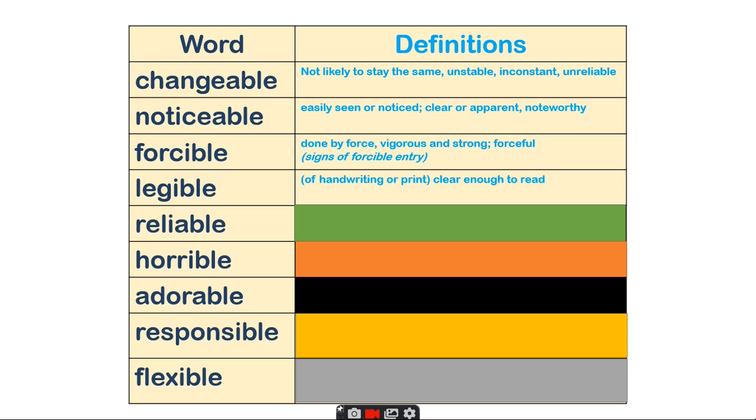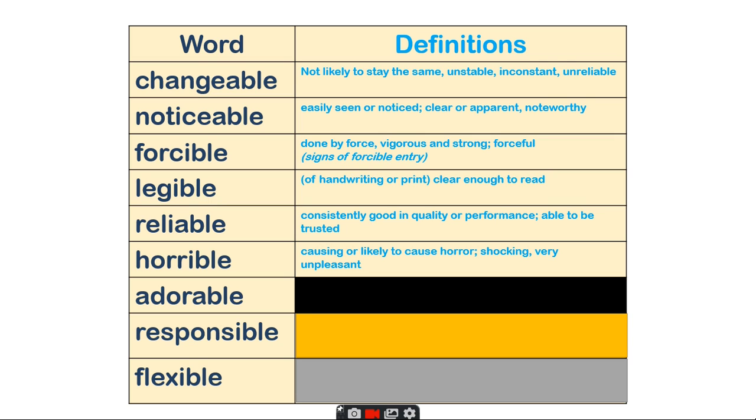Legible - usually relates to handwriting, making sure something is clear enough to read. Reliable - consistently good in quality or performance, able to be trusted. Horrible - causing or likely to cause horror, shocking, something very unpleasant.